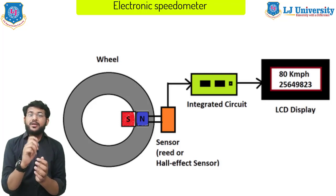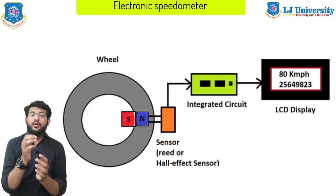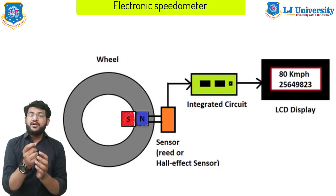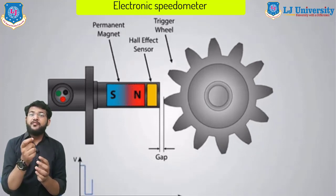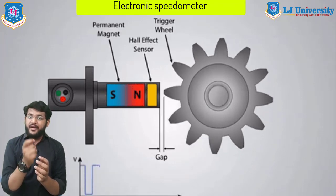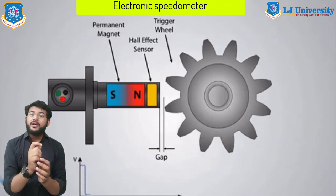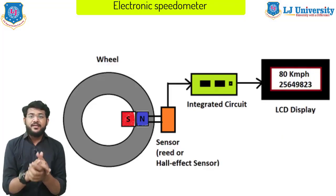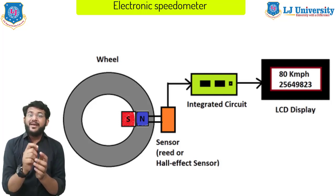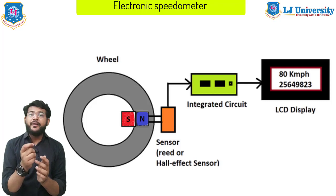Electronic speedometers work in a completely different way. Small magnets are attached to the car's rotating drive shaft and sweep past tiny magnetic sensors — either reed switches or Hall effect sensors — positioned nearby. Each time the magnet passes the sensor, they generate a brief pulse of electric current. An electronic circuit counts how quickly the pulses are arriving and converts this into the speed displayed electronically on an LCD display. Since the circuit is measuring the number of wheel rotations, it can also keep a count of how far you have traveled, doubling up as an odometer — a distance measuring meter.